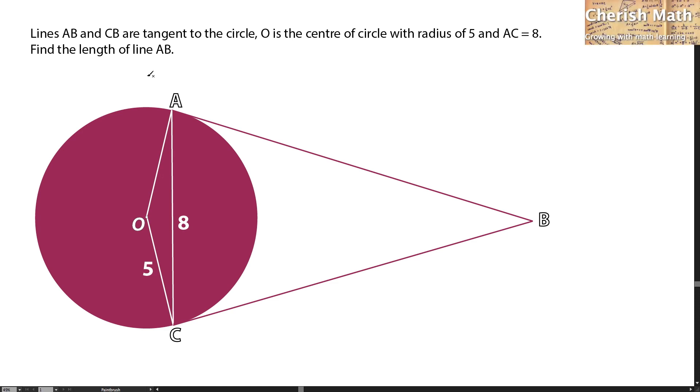Hi from Cherish Math. This is the question. Lines AB and CB are tangent to the circle. O is the center of circle with radius of 5 and AC equals 8. Find the length of line AB.